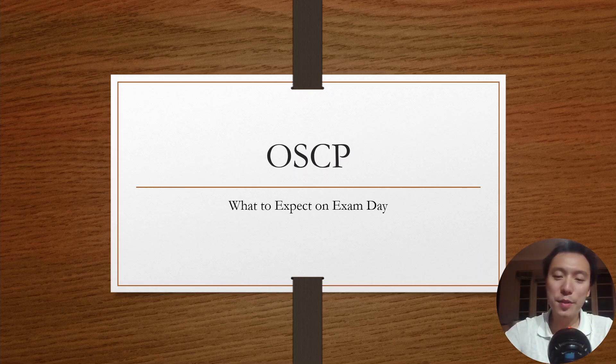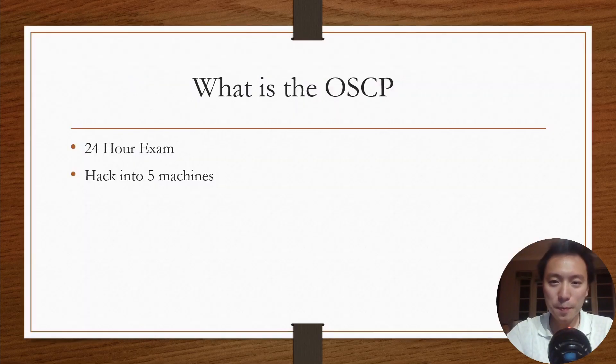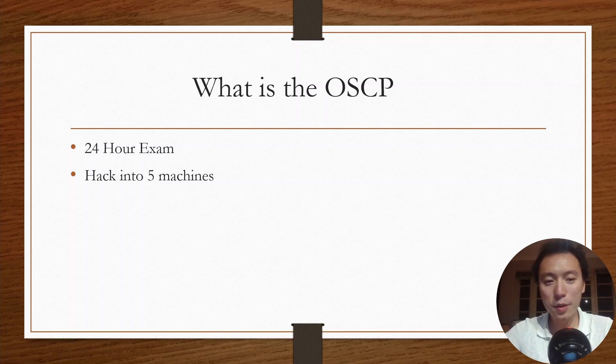So let's get into it. What is the OSCP? It's a 24-hour exam where you have to hack into five machines. The machines are worth various point values—two machines worth 25 points each, two machines worth 20 points each, and one machine worth 10 points. In total, you have to get 70 points to pass the exam.